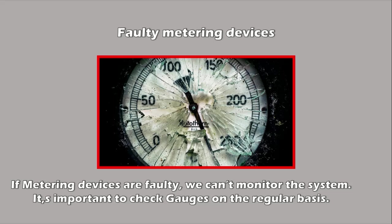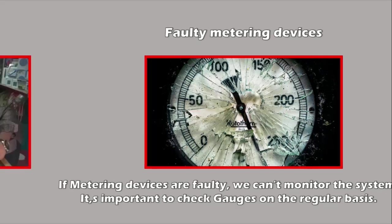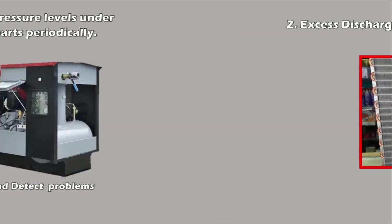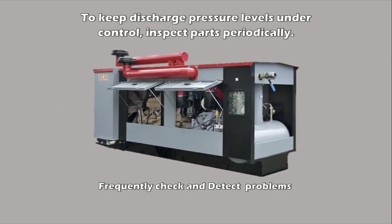Air compressor overheating issues are often the result of excess discharge pressure, which typically stems from one or more of the following issues: dirty condensing coils, ill-fitted discharge line, blockage of condenser air, inconsistent condenser fan, overcharging refrigerant, or an undersized condenser. To keep discharge pressure levels under control, you should inspect the condensing parts periodically for signs of any problems.